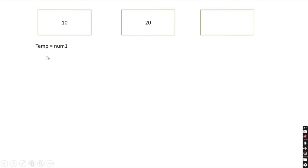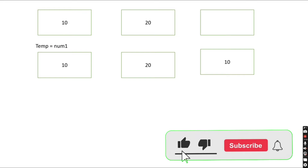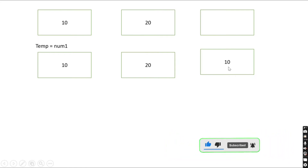The first step is you need to assign the value of num1 to the temporary variable. So whatever value you have in num1, you assign it to the temporary variable. After this step, num1 will have 10, num2 will have 20, and the temporary variable will now have 10 because the value of num1 has been assigned to it.